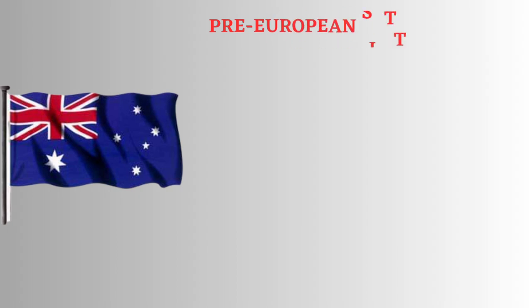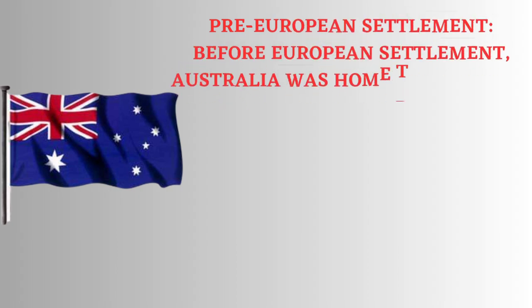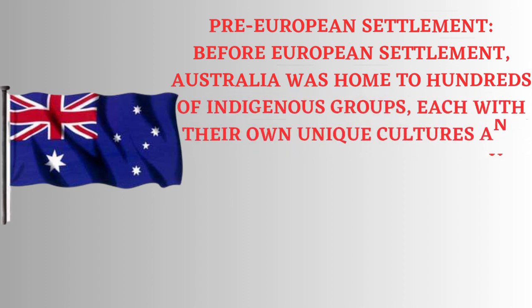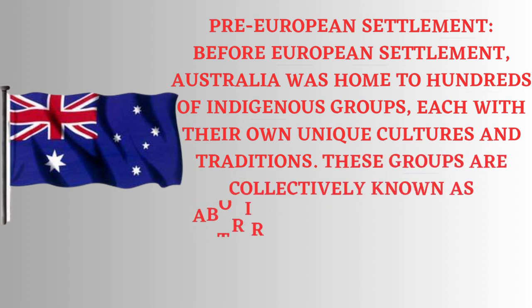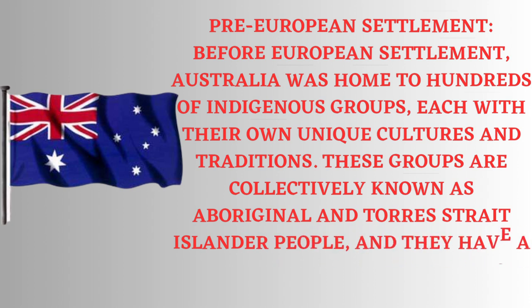Pre-European Settlement: Before European settlement, Australia was home to hundreds of indigenous groups, each with their own unique cultures and traditions. These groups are collectively known as Aboriginal and Torres Strait Islander people, and they have a rich history of over 65,000 years.